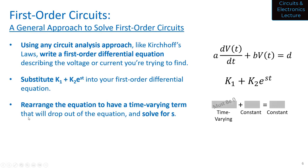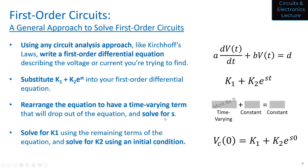You rearrange the equation to have a time-varying term, which will drop out of the equation, and then you solve for s. Remember: the squiggly plot plus a constant equals a constant — that time-varying term must go to zero, and you can solve for s. Then you solve for k1 using the remaining terms of that equation, and then you solve for k2 using the initial condition. You can review last lecture on that.